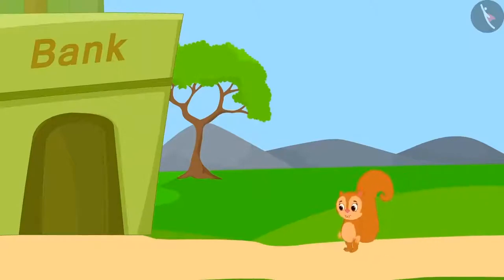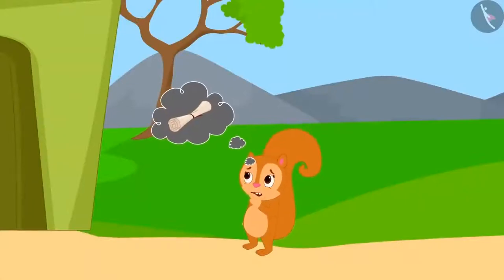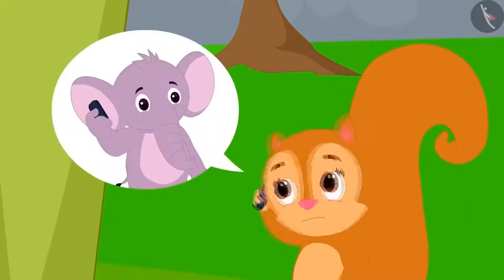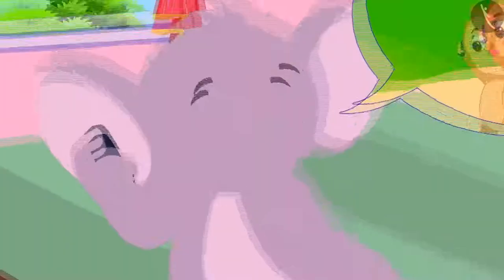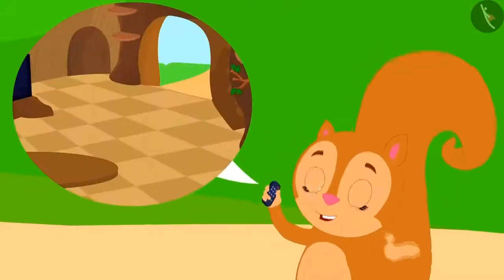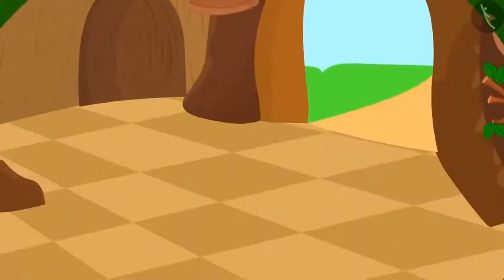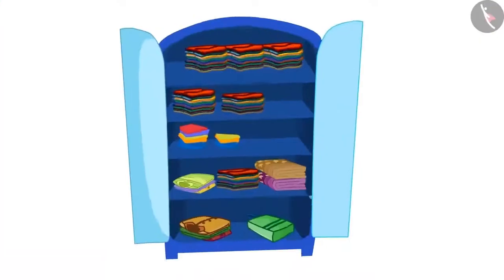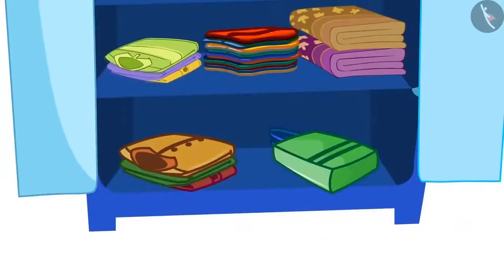Today, Chanda has gone to the bank for some important work, but she has forgotten some important documents back home. She immediately called Appu and asked him to bring the papers from her house. Appu asked her where he would find the papers. Chanda told him that as soon as he opens the main door and enters the house, he has to walk ten steps straight towards a blue cupboard. He will find the papers in the lowermost shelf of the cupboard in a packet.